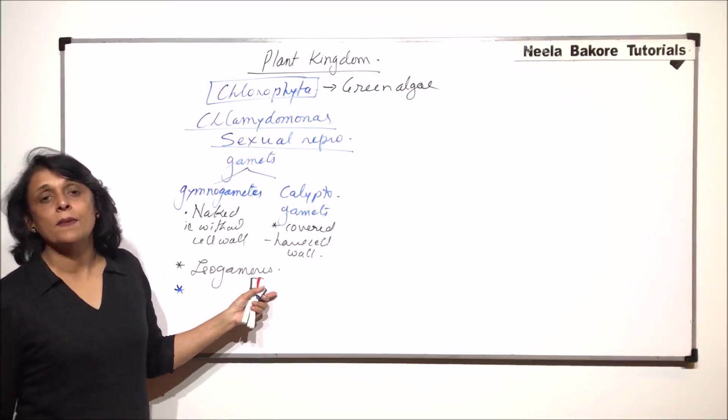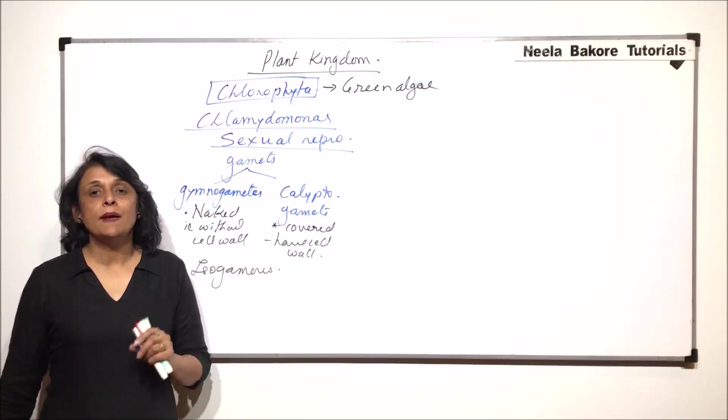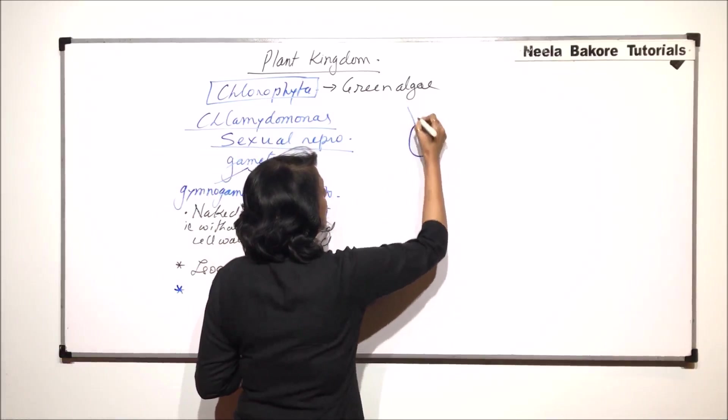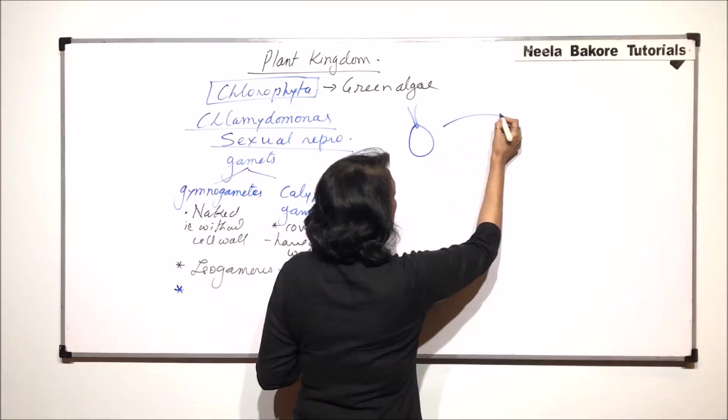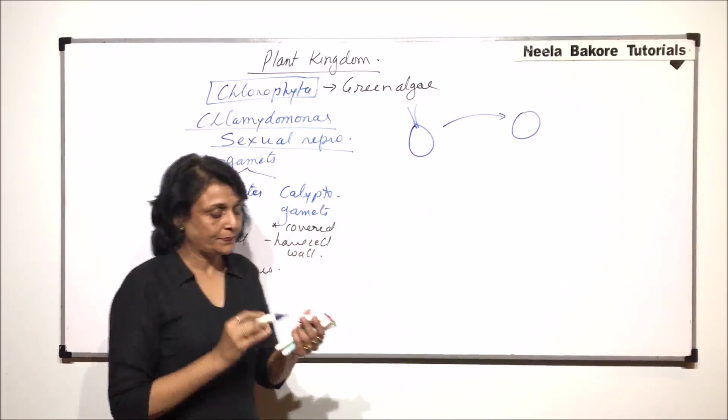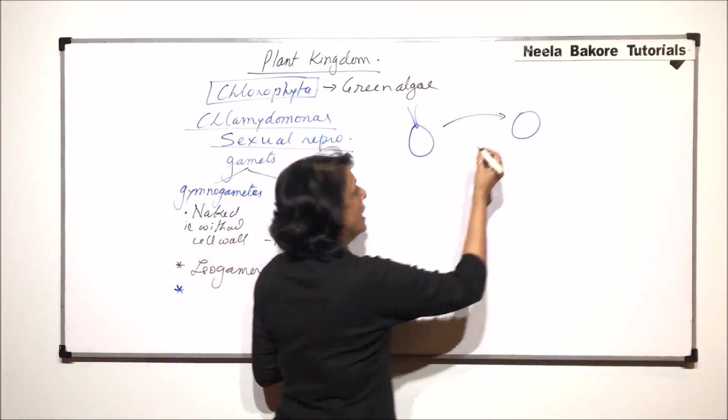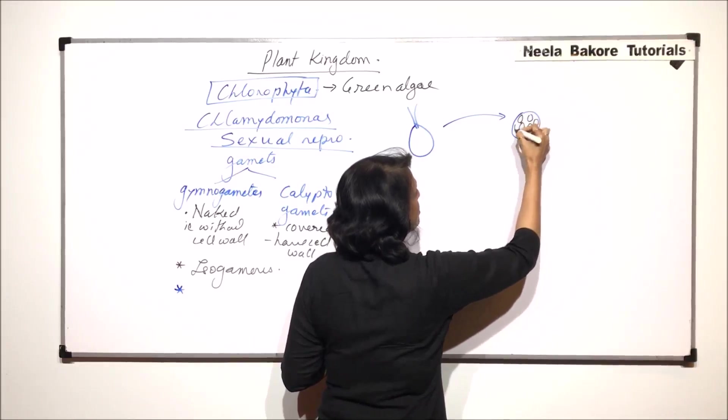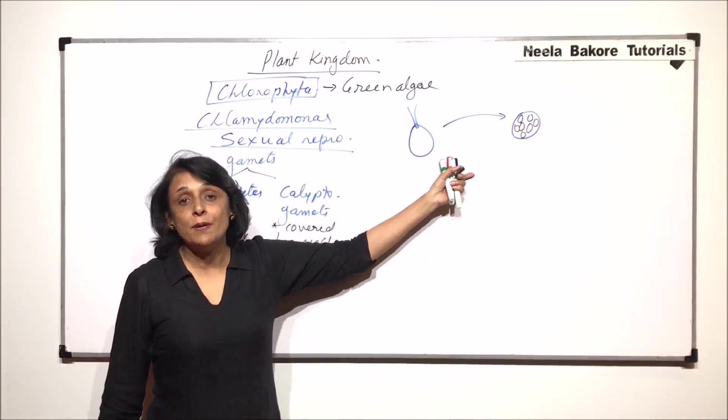Now the formation of these gametes is pretty much same as zoospores are produced. If you are able to recall, the method of zoospore production was that these Chlamydomonas, which are biflagellate and motile structures, lose their flagella and become non-motile. They also lose their contractile vacuoles and the protoplast undergoes mitotic division to produce zoospores. Same process is for gamete formation.